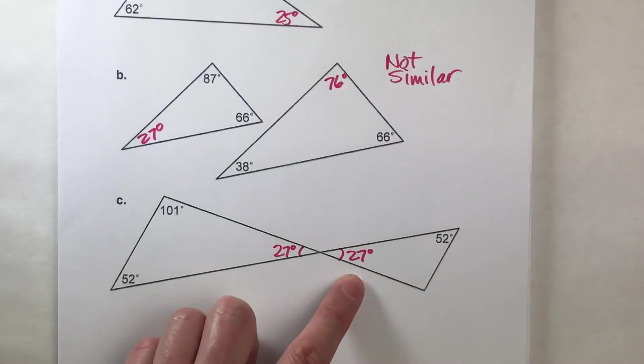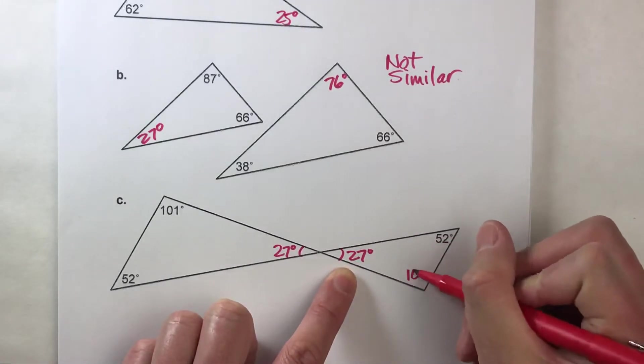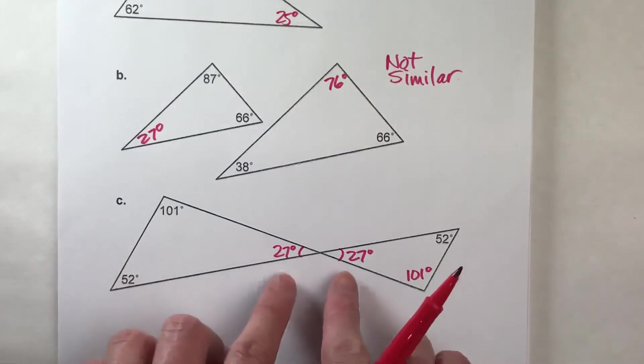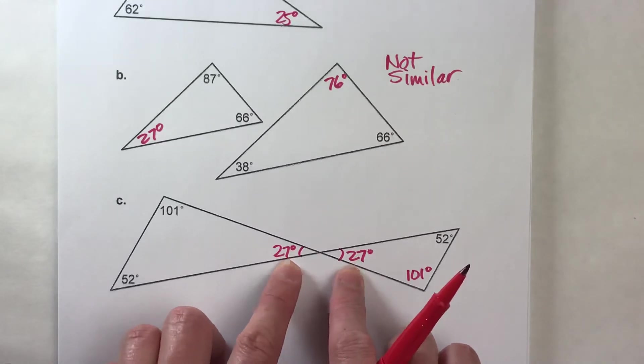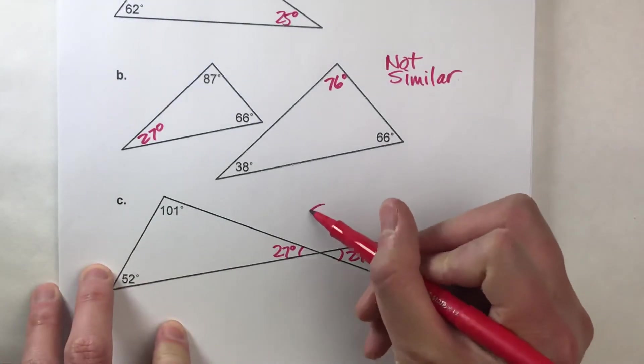So now we can find that third angle. 27 plus 52 is 79, which makes this angle 101 degrees, so it adds up to 180. Now let's check it out. They both have 27 in common, they both have 52, they both have 101. Guess what? They are similar.